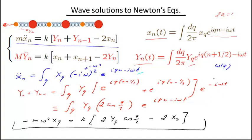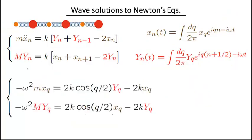We can repeat the same procedure for the second Newton law for the heavy atoms, giving an analogous equation in Fourier space. The good thing about these equations is that instead of an infinite chain of coupled equations, we now have just two coupled equations. There is no coupling between different Q values — unlike in real space where we had coupling between neighboring sites N. Also, it is no longer a differential equation; instead of a derivative, we now have just omega squared. It's much easier to deal with this essentially linear 2-by-2 system of equations.